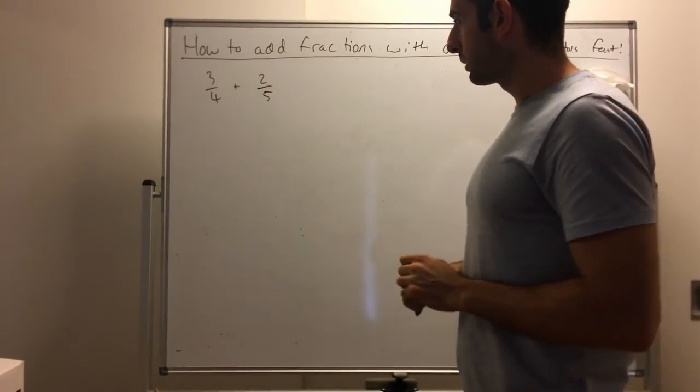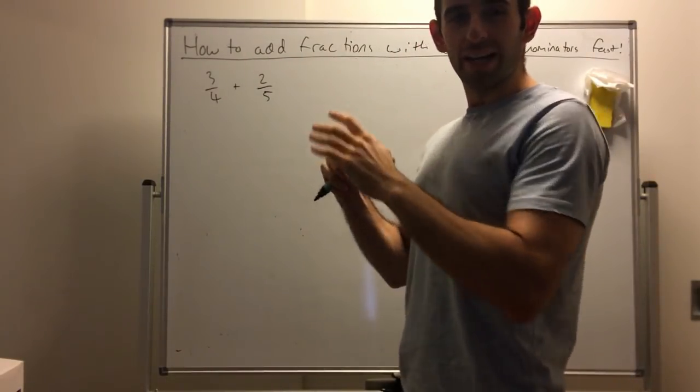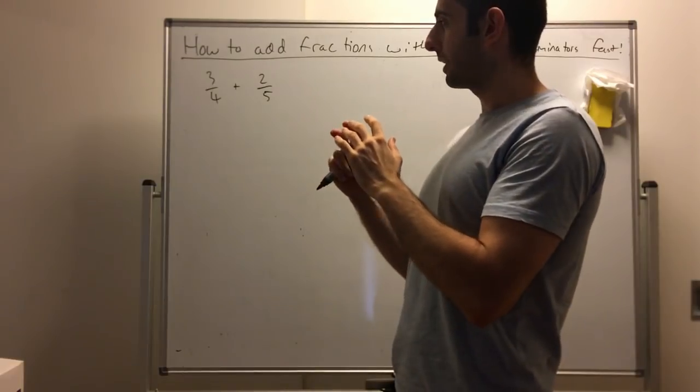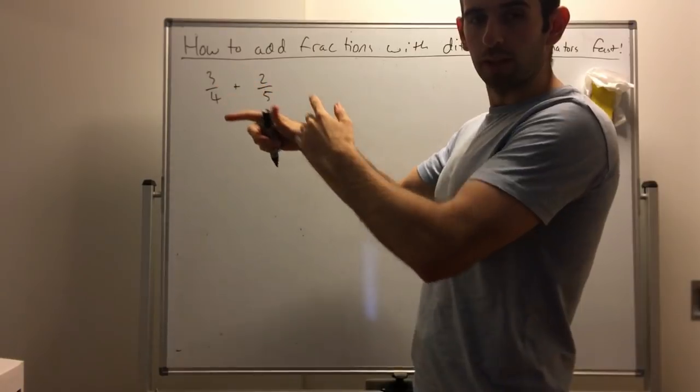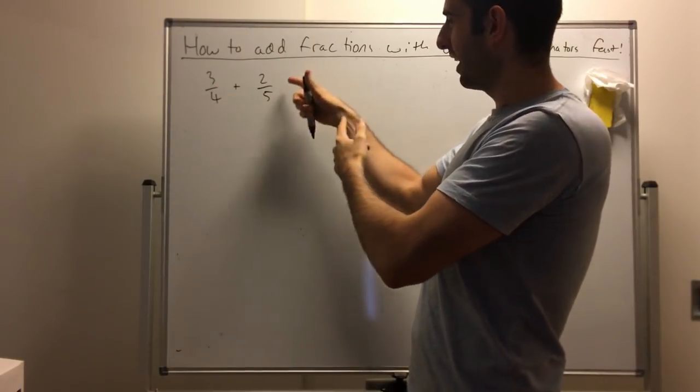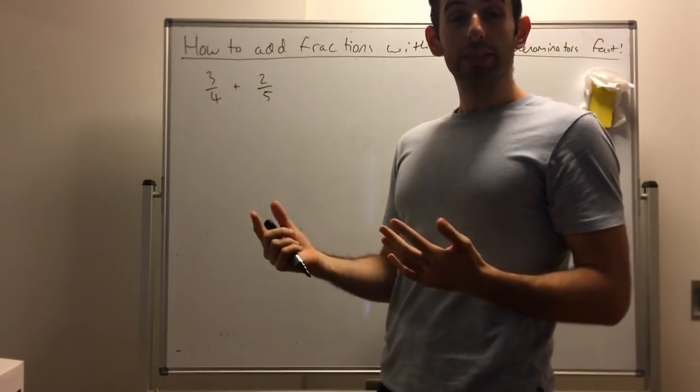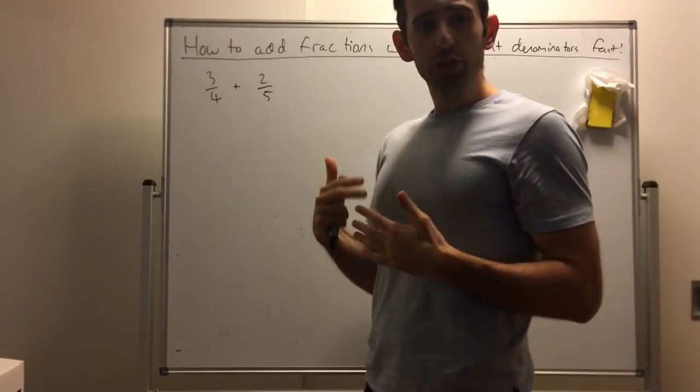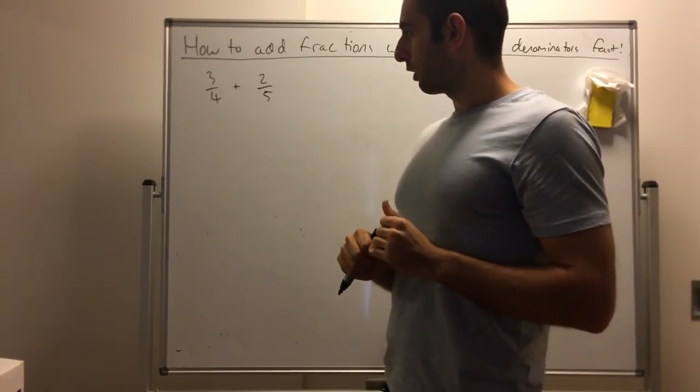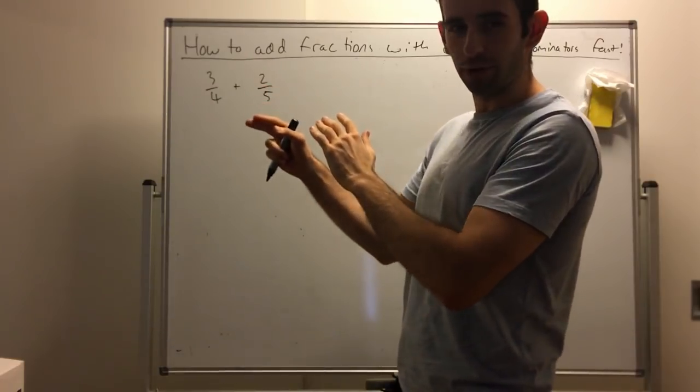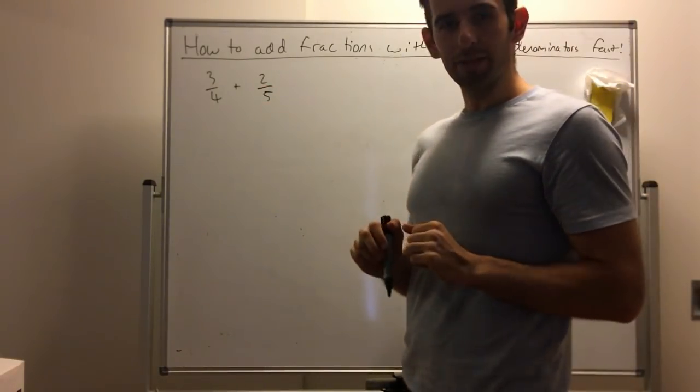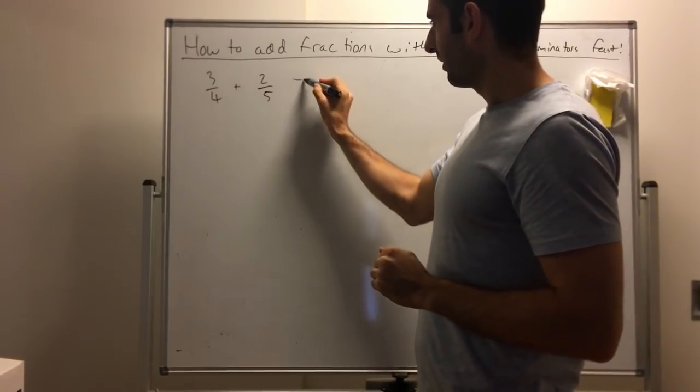Three quarters plus two fifths. When adding fractions with different denominators, you're taught to find a common denominator and transform each fraction. That process is straightforward, but what I find a lot of students struggle with is finding that common denominator and then having to times top and bottom by what number. We've got a much faster method.